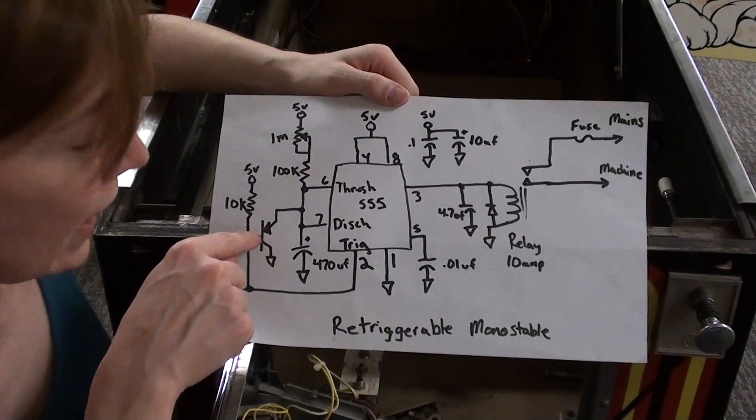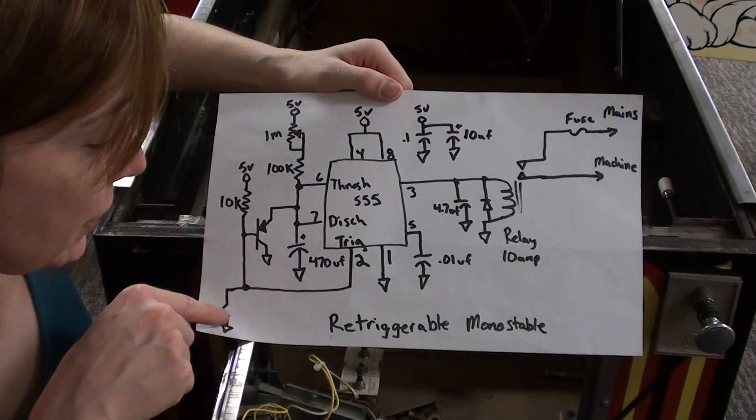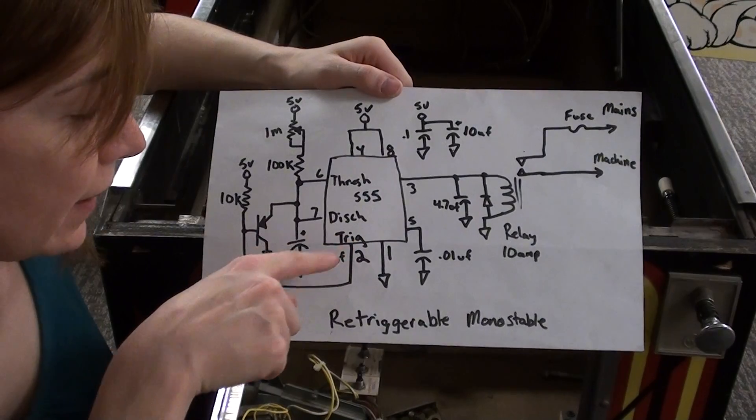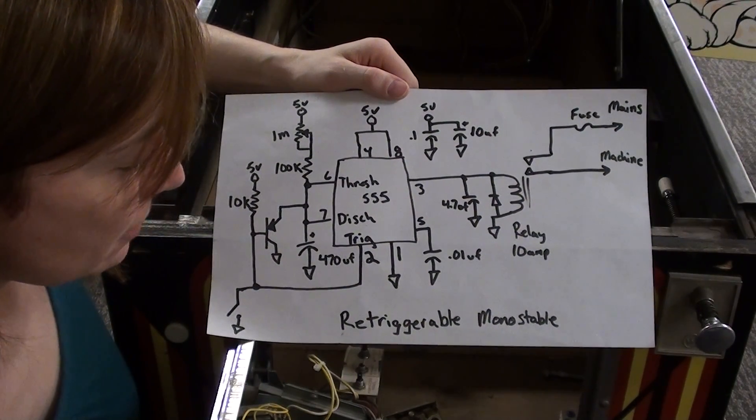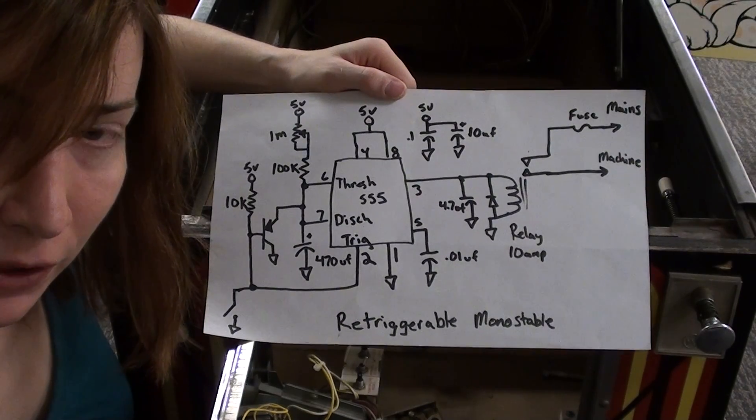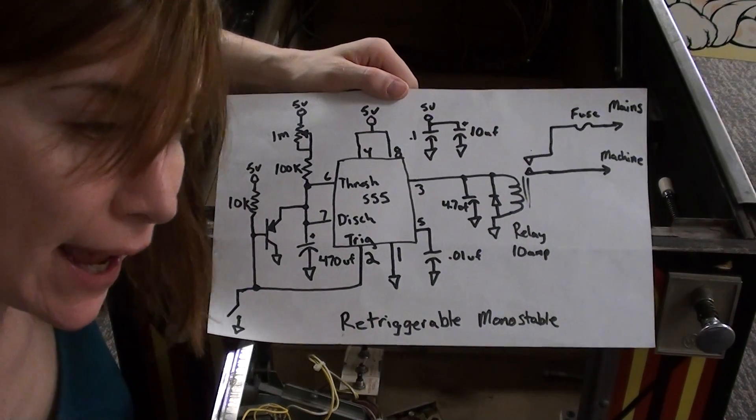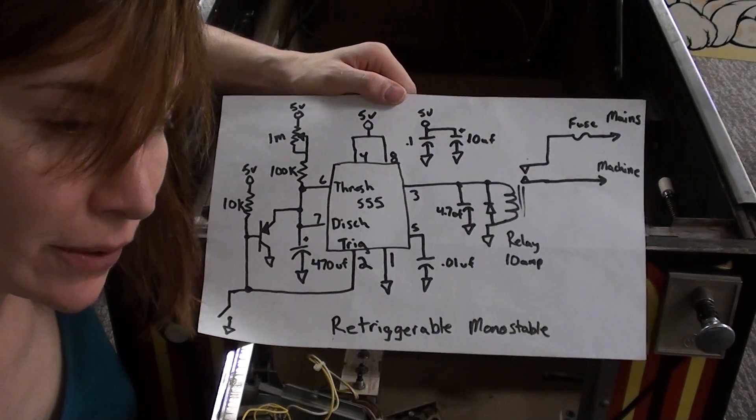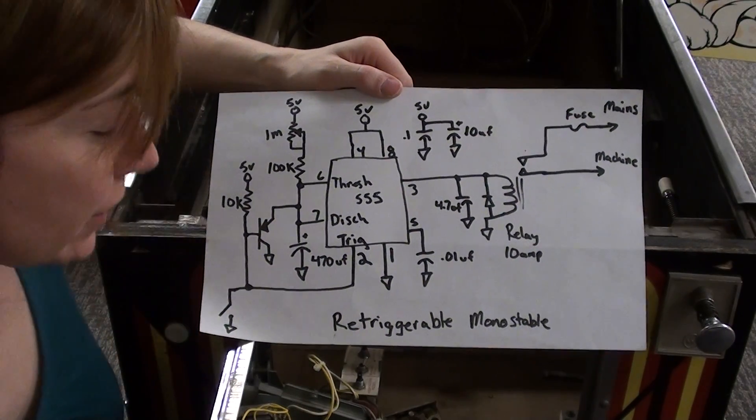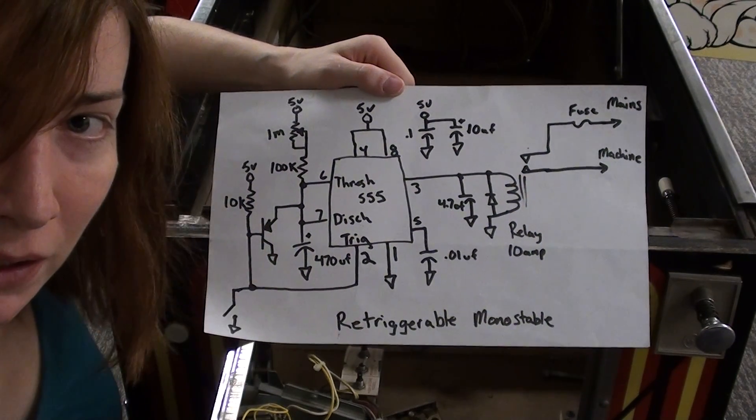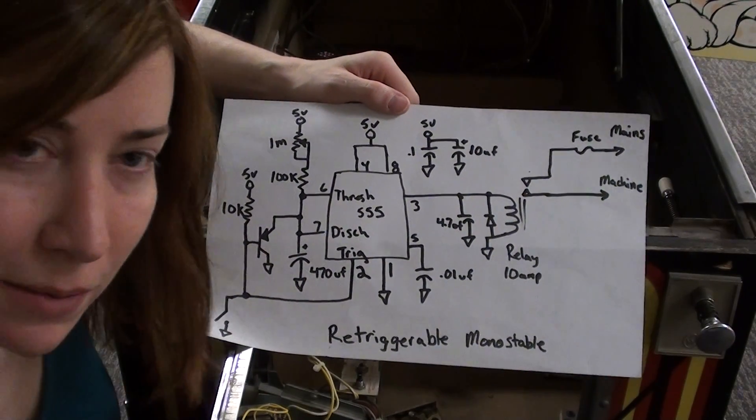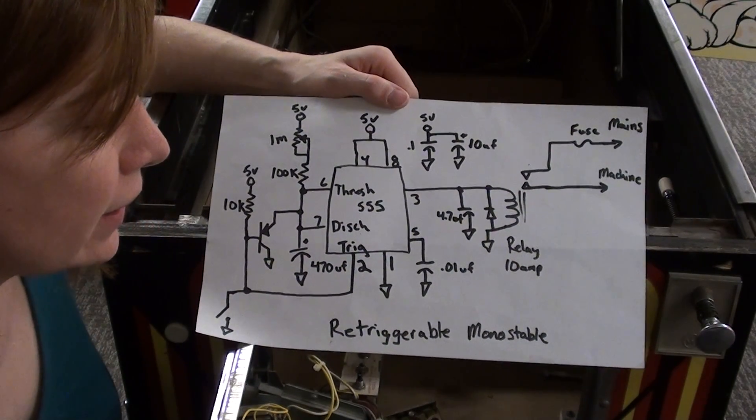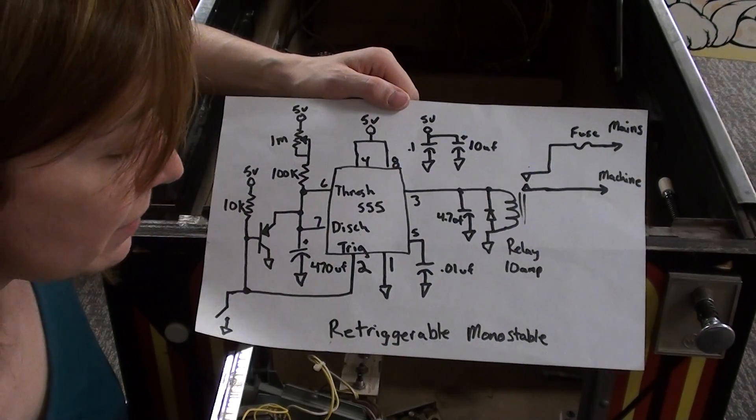To make it retriggerable, you add a PNP transistor that's also hooked to the switch, because the 555 timer trigger input pins are pretty much locked out when you trigger it the first time, so it would have to go all the way to a complete off state before being re-triggered. So this little PNP here pulls this capacitor back towards ground and allows it to be re-triggered over and over and over again until people stop pressing buttons.